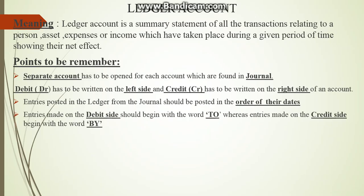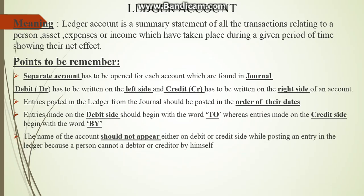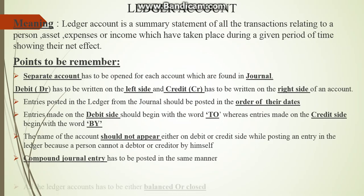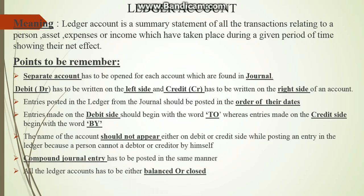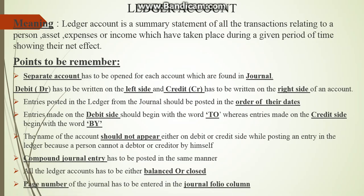The fourth point: entries made on the debit side should begin with the word 'To,' whereas entries made on the credit side begin with 'By.' The name of an account should not appear on either the debit or credit side while posting an entry in the Ledger, because a person cannot be a debtor or creditor to themselves. For example, if I prepare a capital account, I should not write 'capital account' inside the account since it is already the heading. Additionally, a compound journal entry has to be posted in the same manner. All Ledger accounts have to be either balanced or closed. Finally, the page number of the journal has to be entered in the journal folio column.